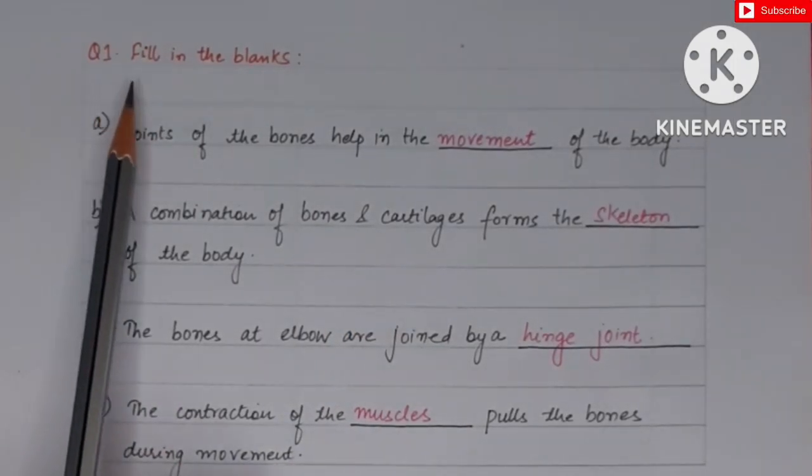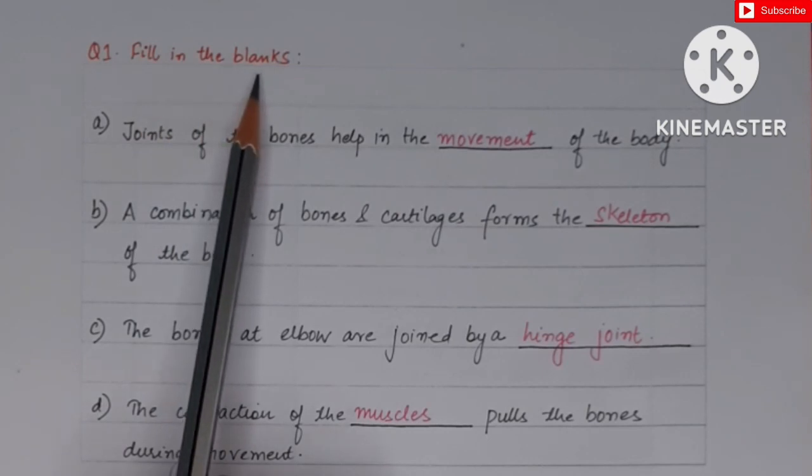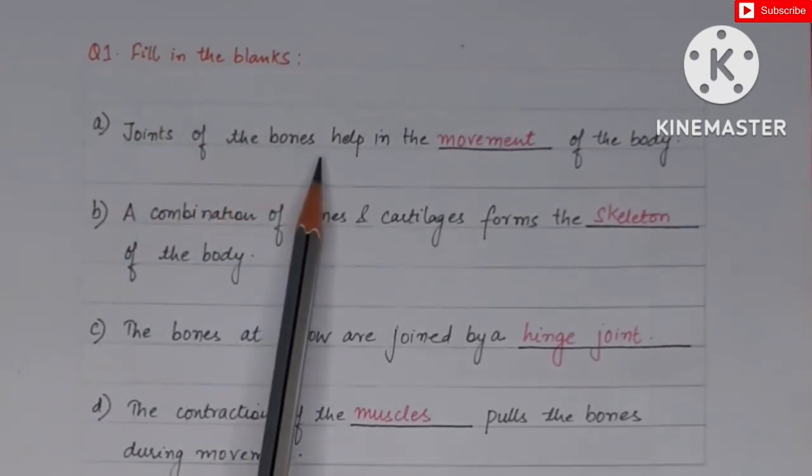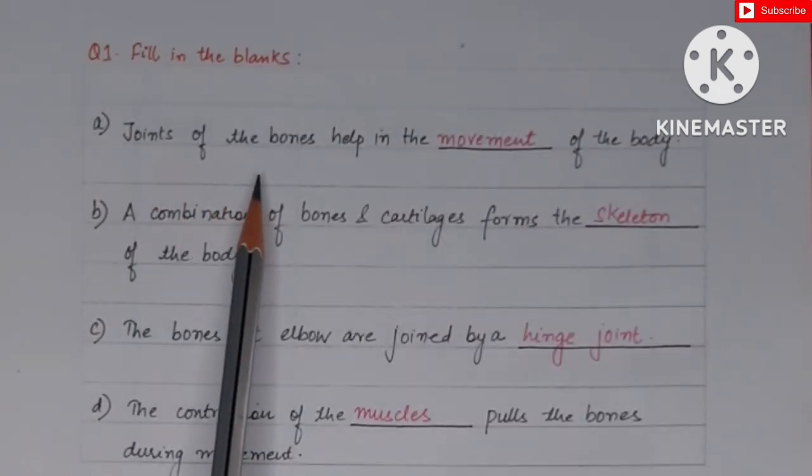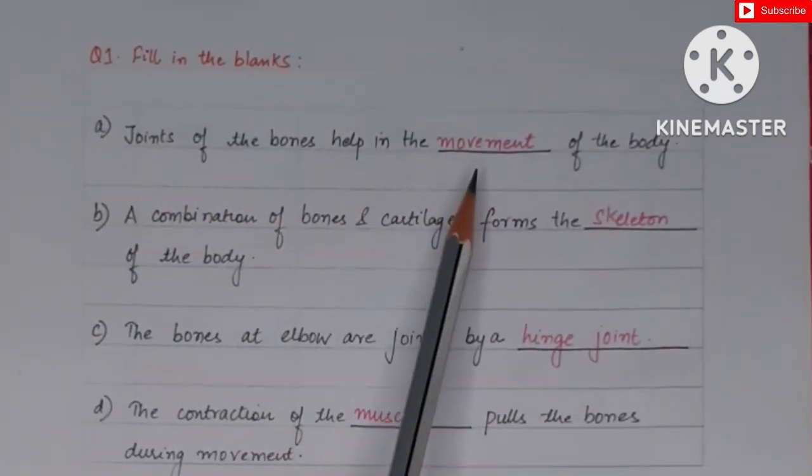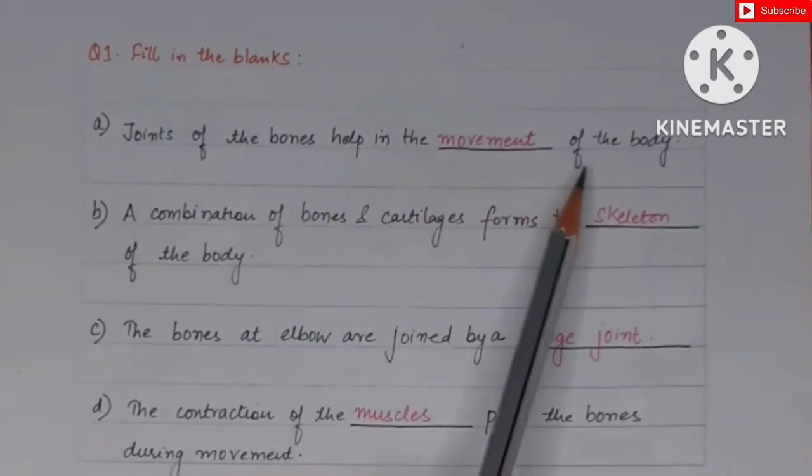Now question number one. Question number one is fill in the blanks. What do we need to do in this? We need to fill up the blanks. So first one is: joints of the bones help in the blank of the body. Which are joints of the bones which helps in the movement. If there is no joint in the body then movement will not be possible.